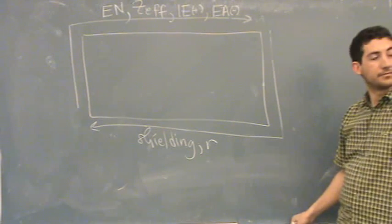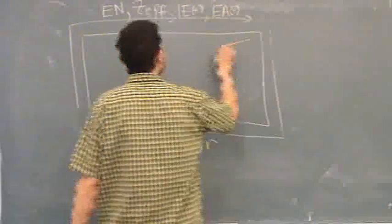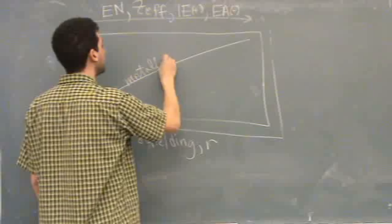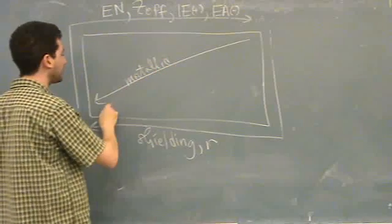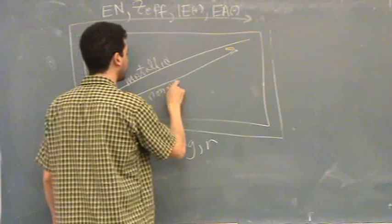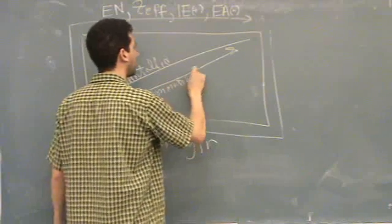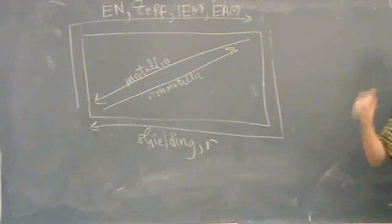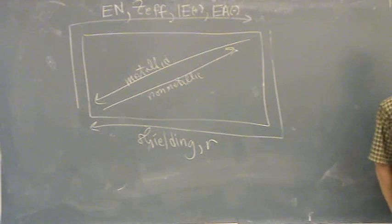There's also a trend for metallic and less metallic. You could draw it on these arrows, but your book draws it in the middle. So metallic and non-metallic. So more metallic as you get towards cesium, less metallic as you get towards fluorine.